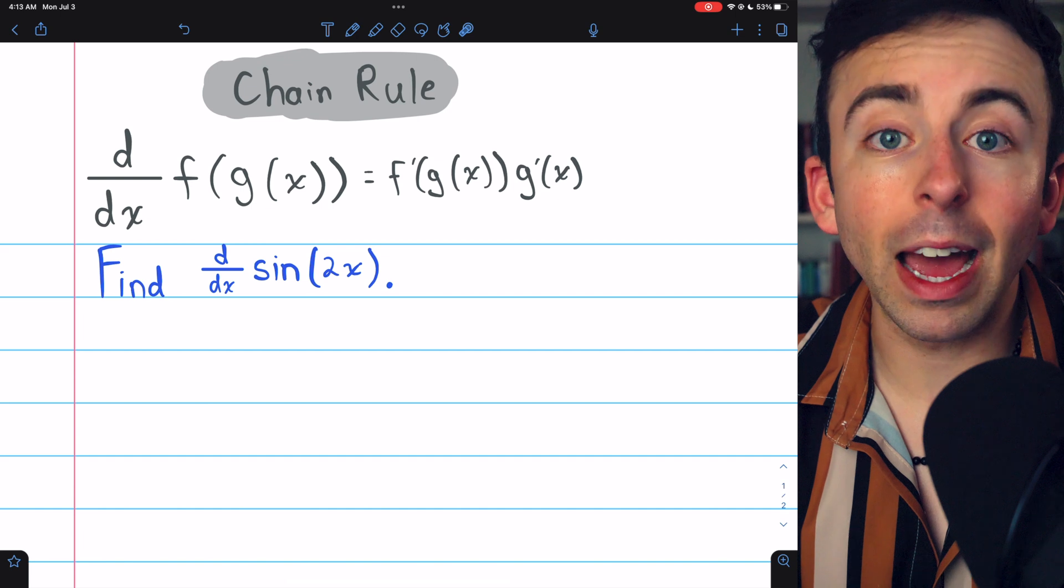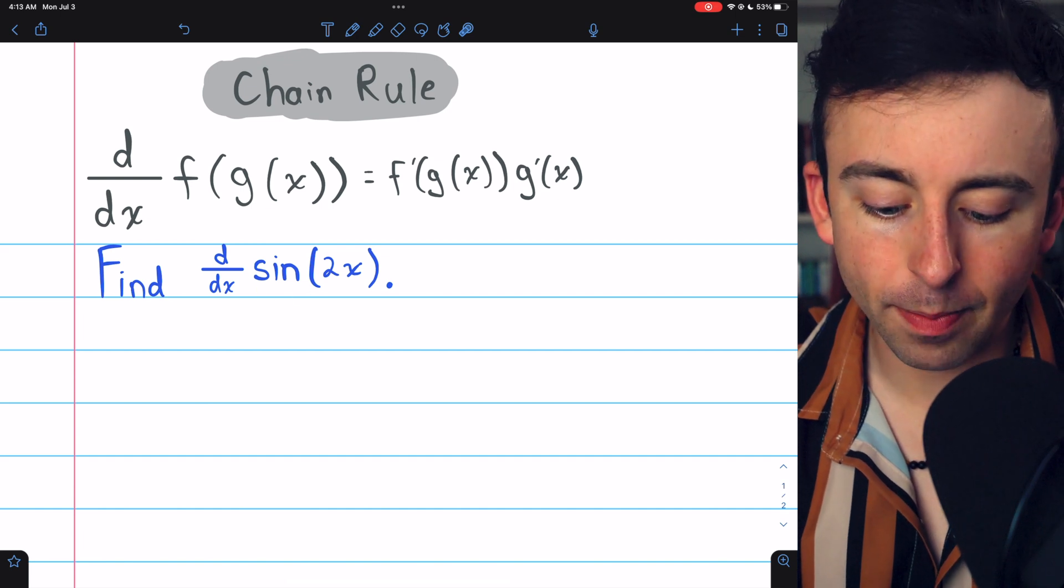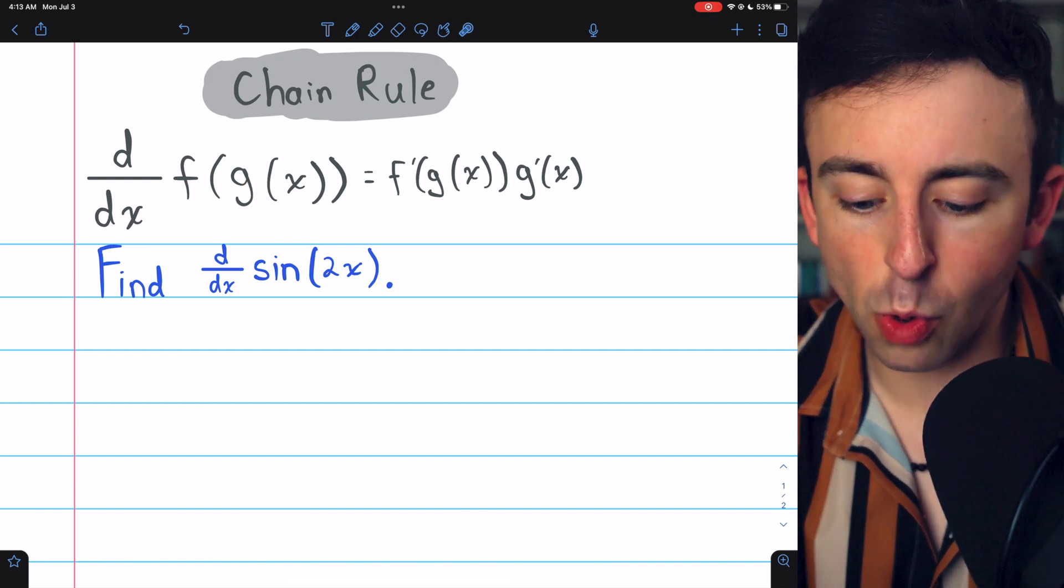In this case, f, the outside function, is sine, and g, the inside function, is 2x.